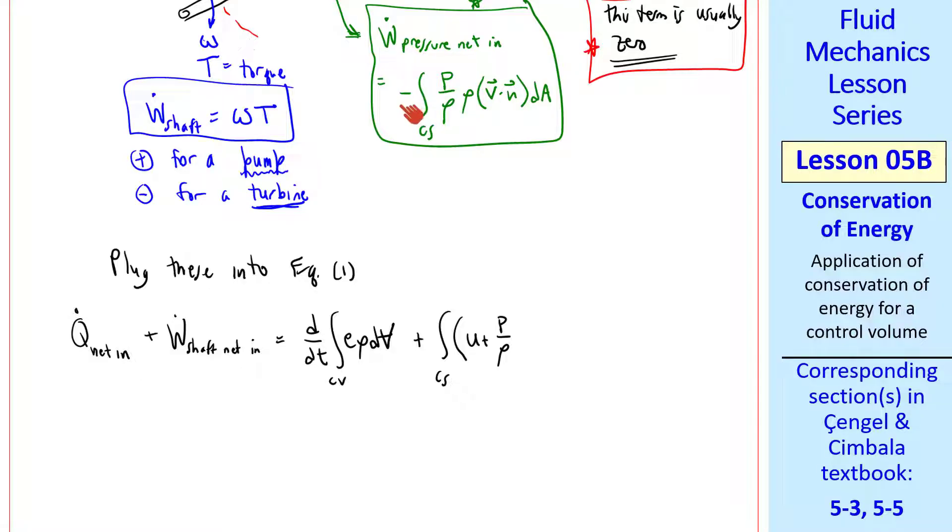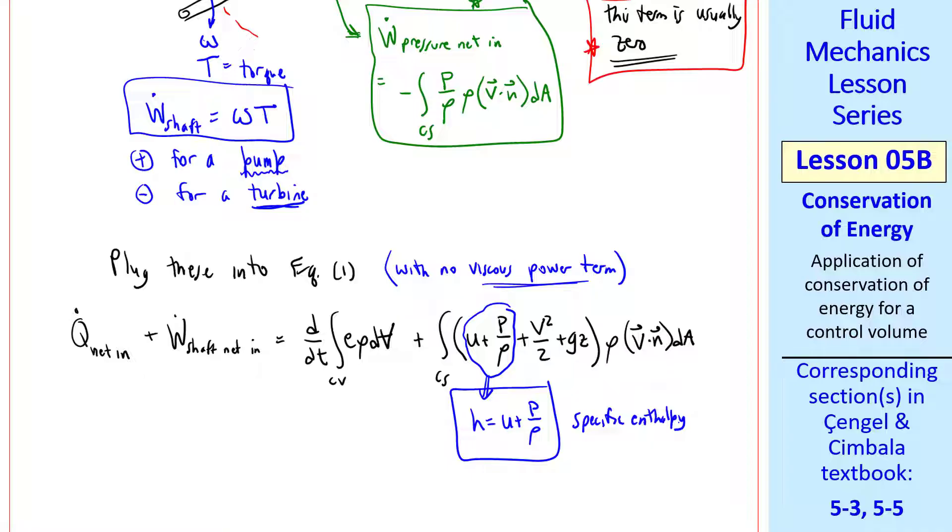So we're going to put this term into here. Notice that we had a minus sign here, but we put this term on the right instead of on the left, so the minus sign goes away. Notice that I've neglected the viscous power term, which will be the usual case in our problems. If this were a live class, I'd ask, what is u plus P/ρ? If you remember from your thermo class, specific enthalpy is equal to u plus P/ρ, which is this term.